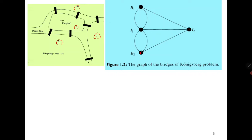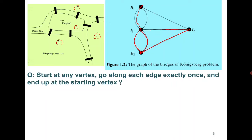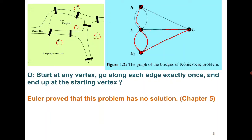Now the problem is to start from any vertex, go along each edge exactly once, and end up at the starting vertex. Attempting this on the Königsberg graph — say starting from B2 — wherever you go, you get stuck and cannot return to B2. So in this case it is not possible, and we will prove it has no solution in Chapter 5.